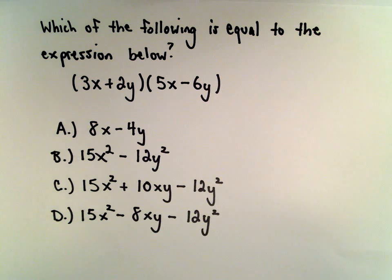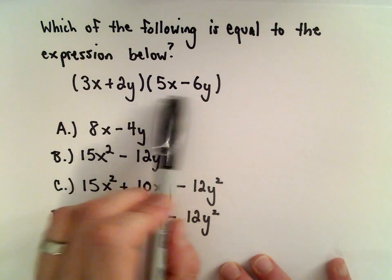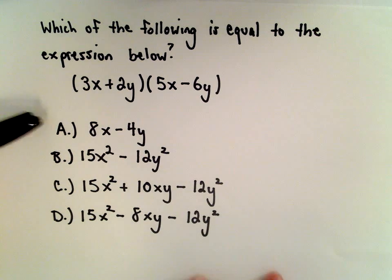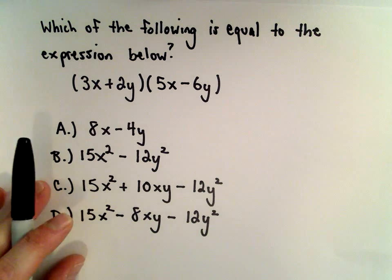Here we have the expression, the quantity 3x plus 2y multiplied by the quantity 5x minus 6y, and we want to know which of these four expressions are going to be the same.